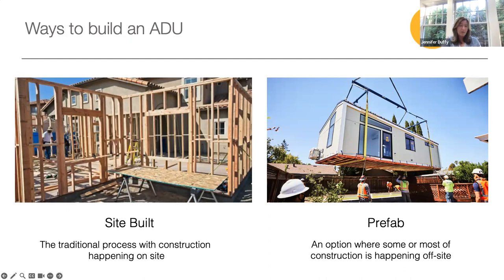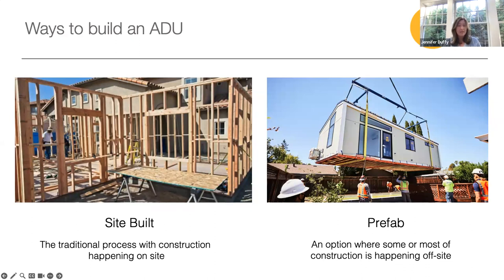The most common consideration for determining which strategy is best depends on your property's site conditions — whether there is enough access to deliver a prefab or modular unit, and whether the prefab or modular unit can fit within the site constraints that may exist on your property. Many homeowners may seek to choose a prefab or modular unit to reduce cost.